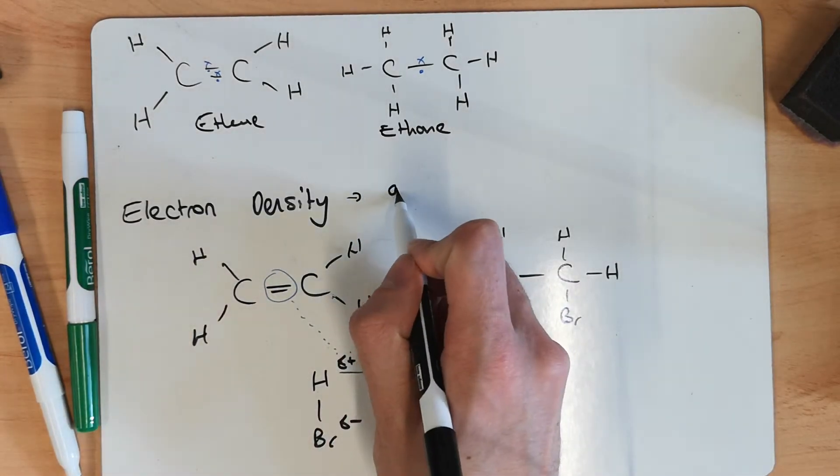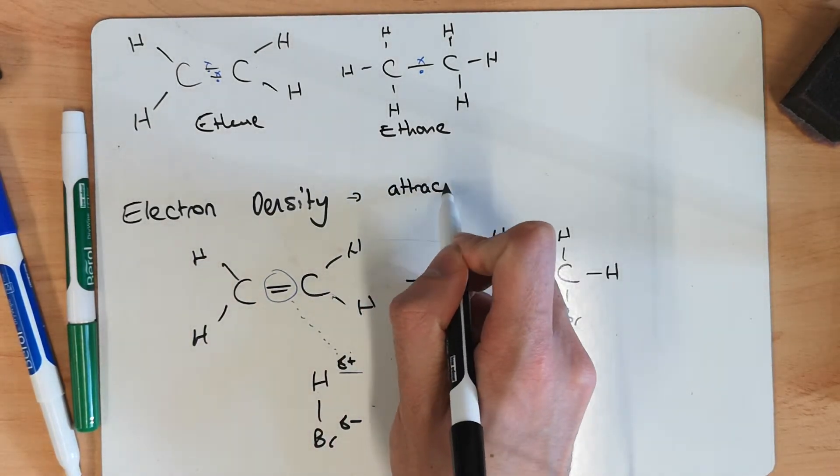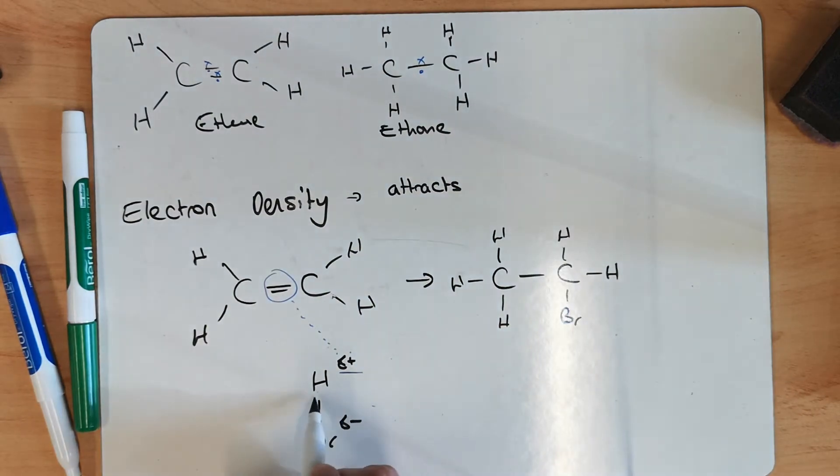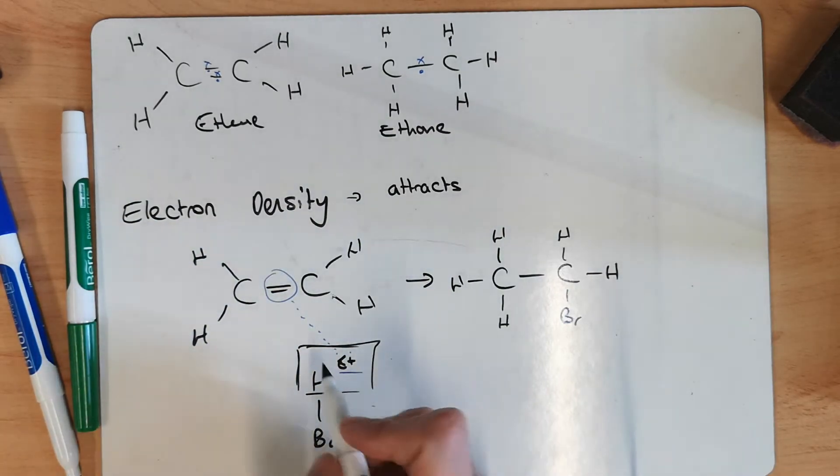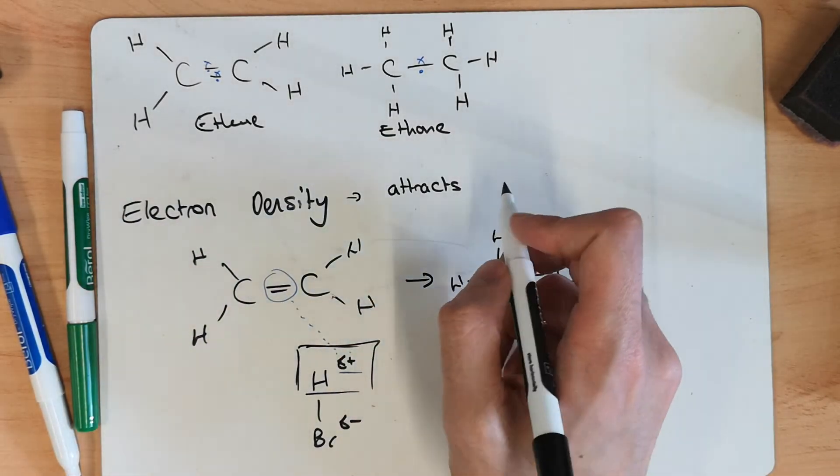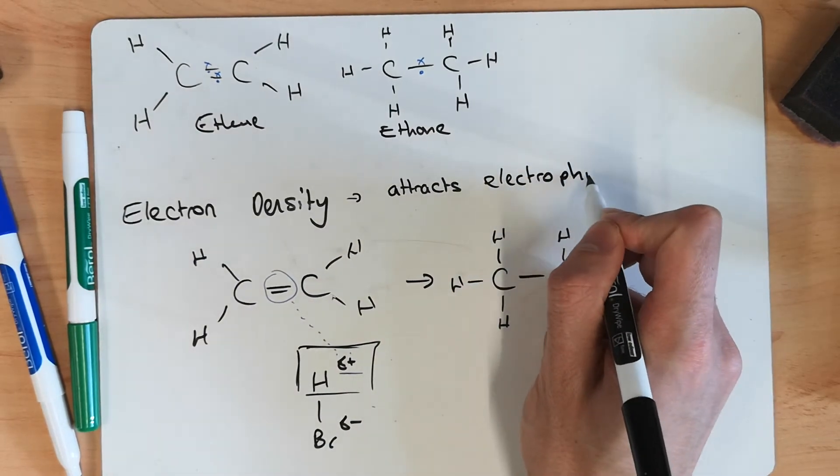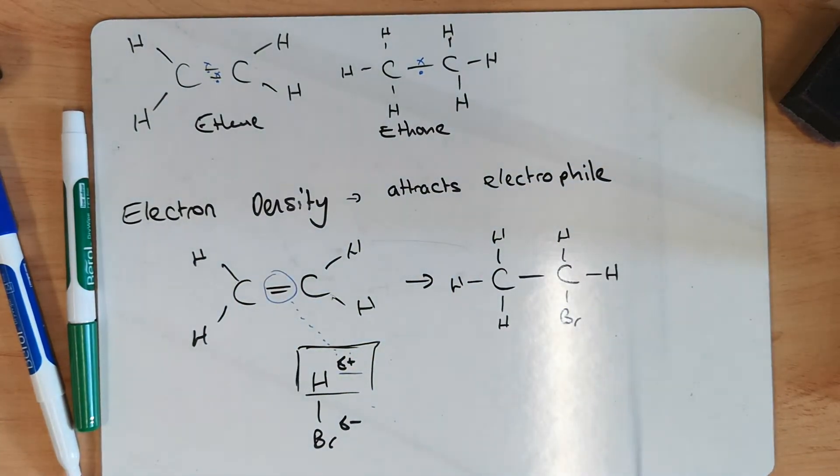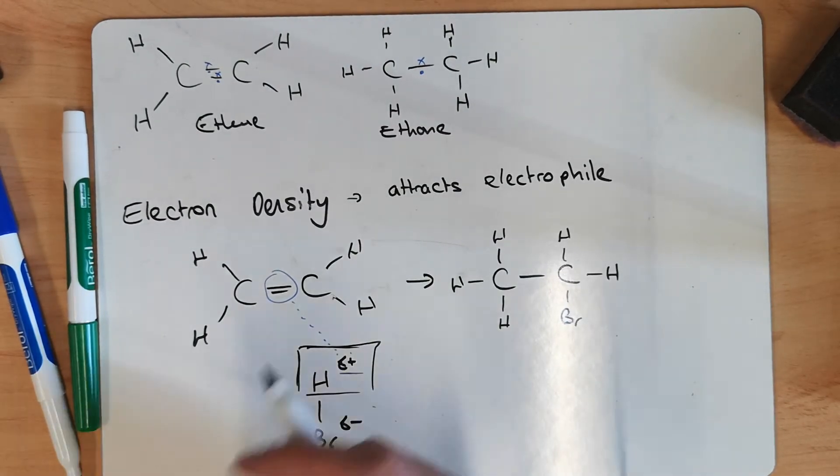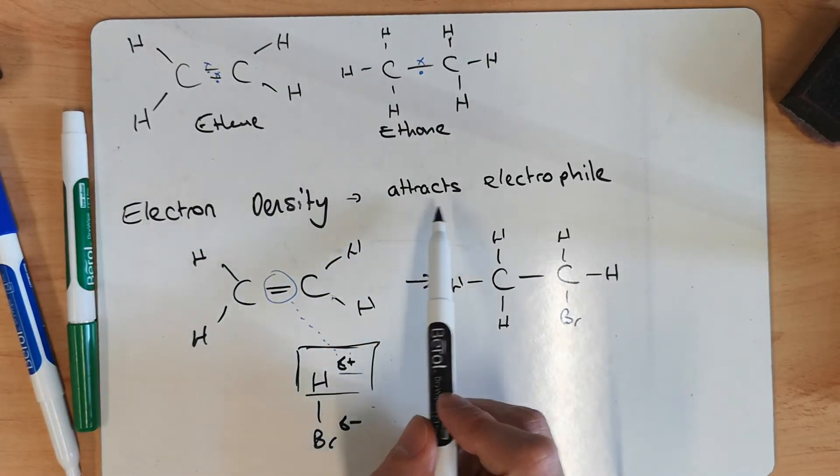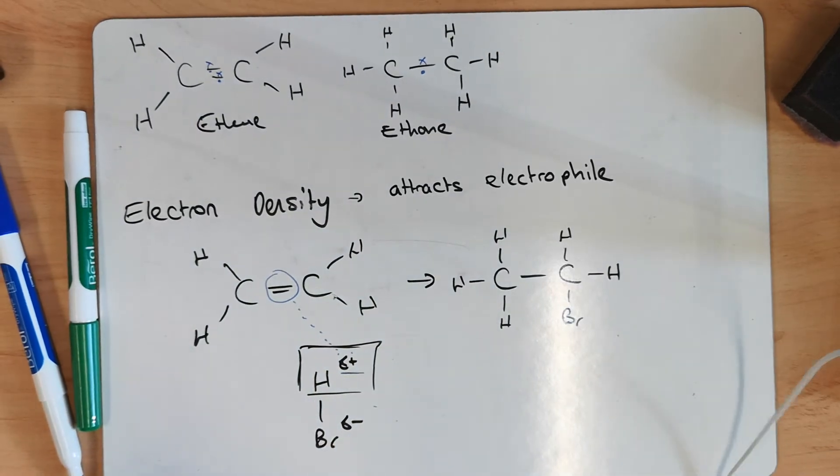So the electron density attracts... Now, we've got a special term for something that's delta positive, or wants to gain a pair of electrons, or is attracted to an area of electron density, and that is electrophile, or likes electrons.